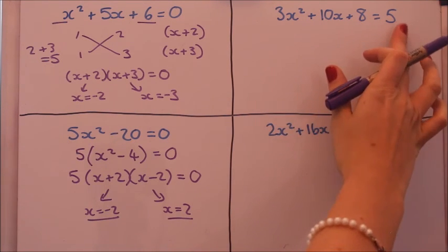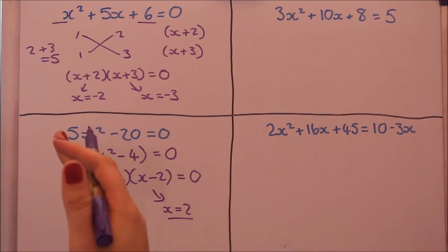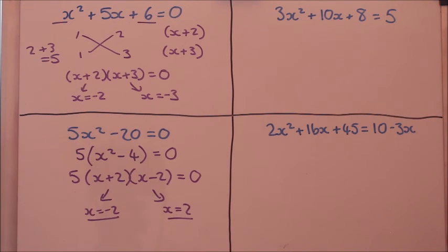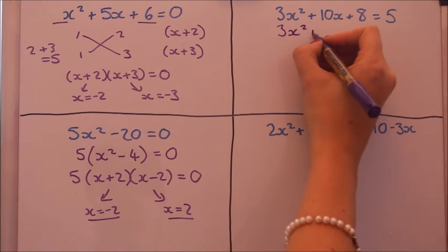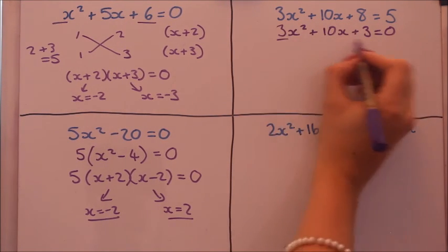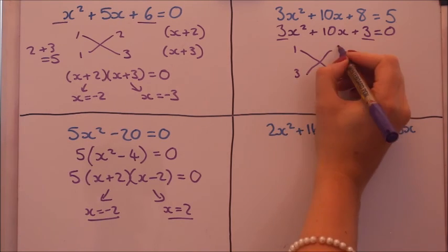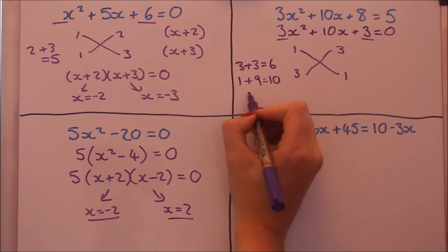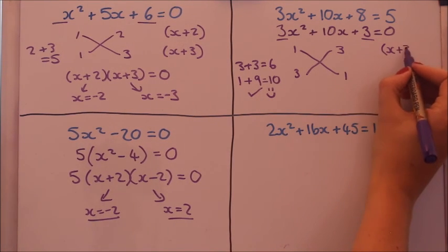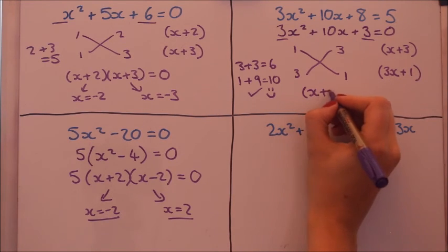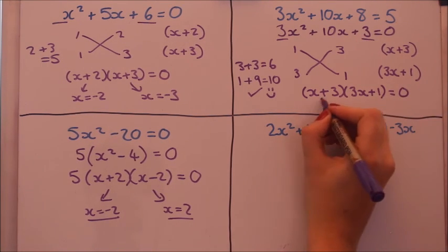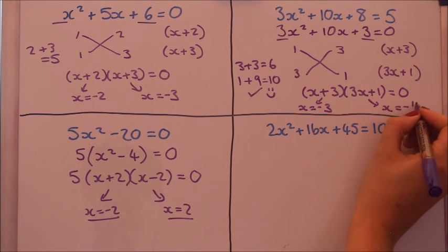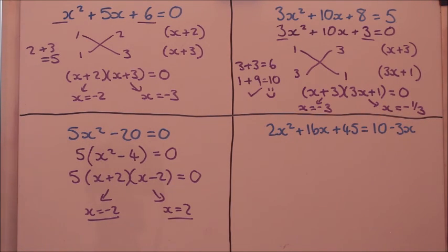Okay, this one here: 3x²+10x+8=5. We're going to take the five over, get everything over onto one side, equal to zero, so you can factorise. This gives 3x²+10x+3=0. In that one I got the numbers one and three the wrong way round the first time, so I did switch them and then it worked. This factors to (x+3)(3x+1)=0, giving x=-3 and x=-1/3.